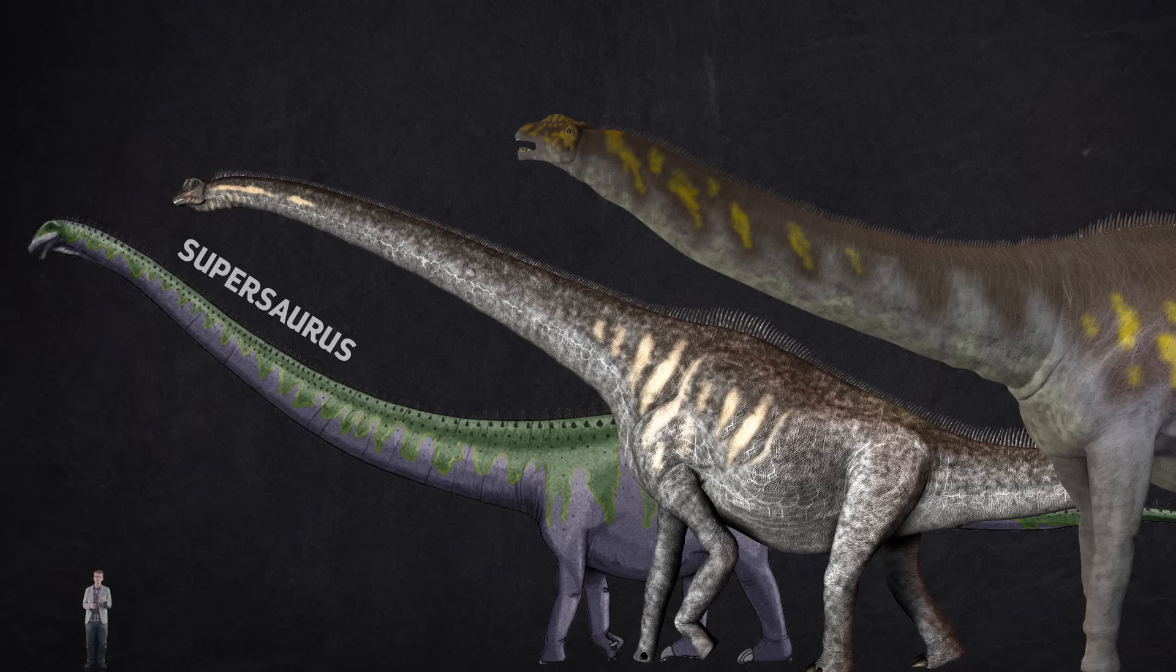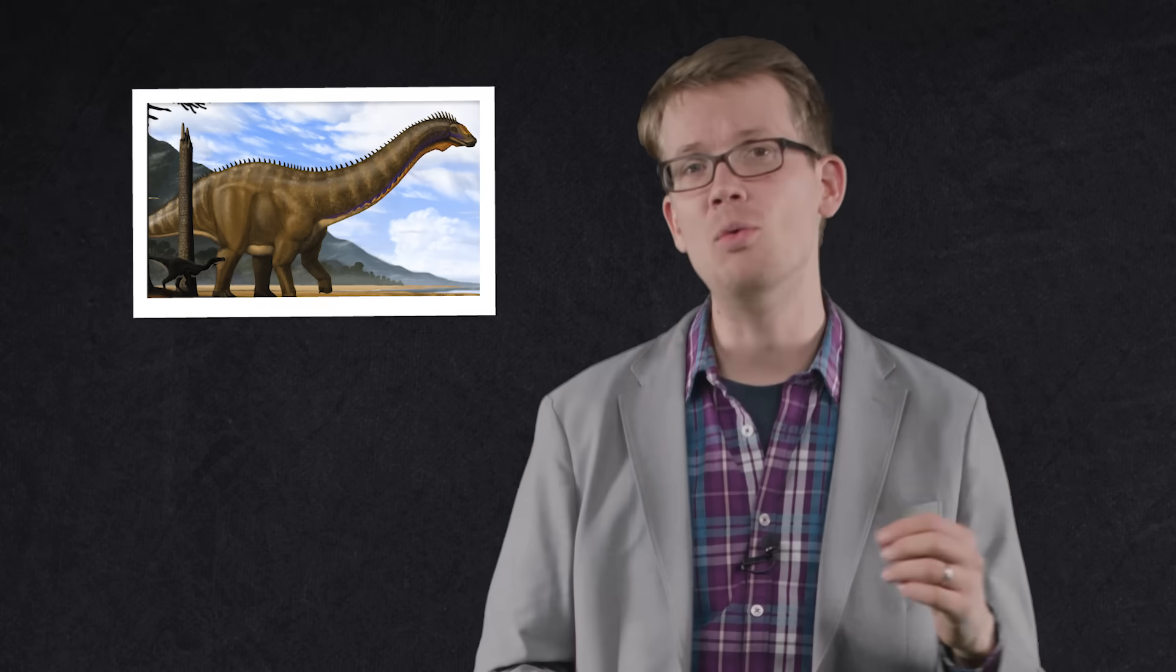From the Jurassic to the Cretaceous periods, when our ancestors were the size of voles and shrews, dinosaurs like Supersaurus, Sauroposeidon, and Argentinosaurus were shaking the earth. So how did they get to be so big, and why did we mammals never even come close to dinosaurs in size?